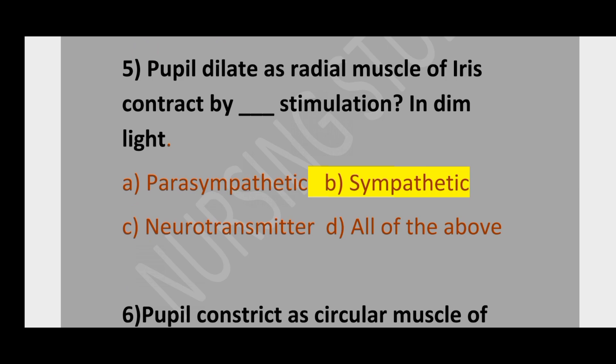Question number 5. Pupil dilation — radial muscle of iris contracts by what stimulation, in dim light? Option A, parasympathetic; option B, sympathetic; option C, neurotransmitter; option D, all of the above. The correct option is sympathetic stimulation.